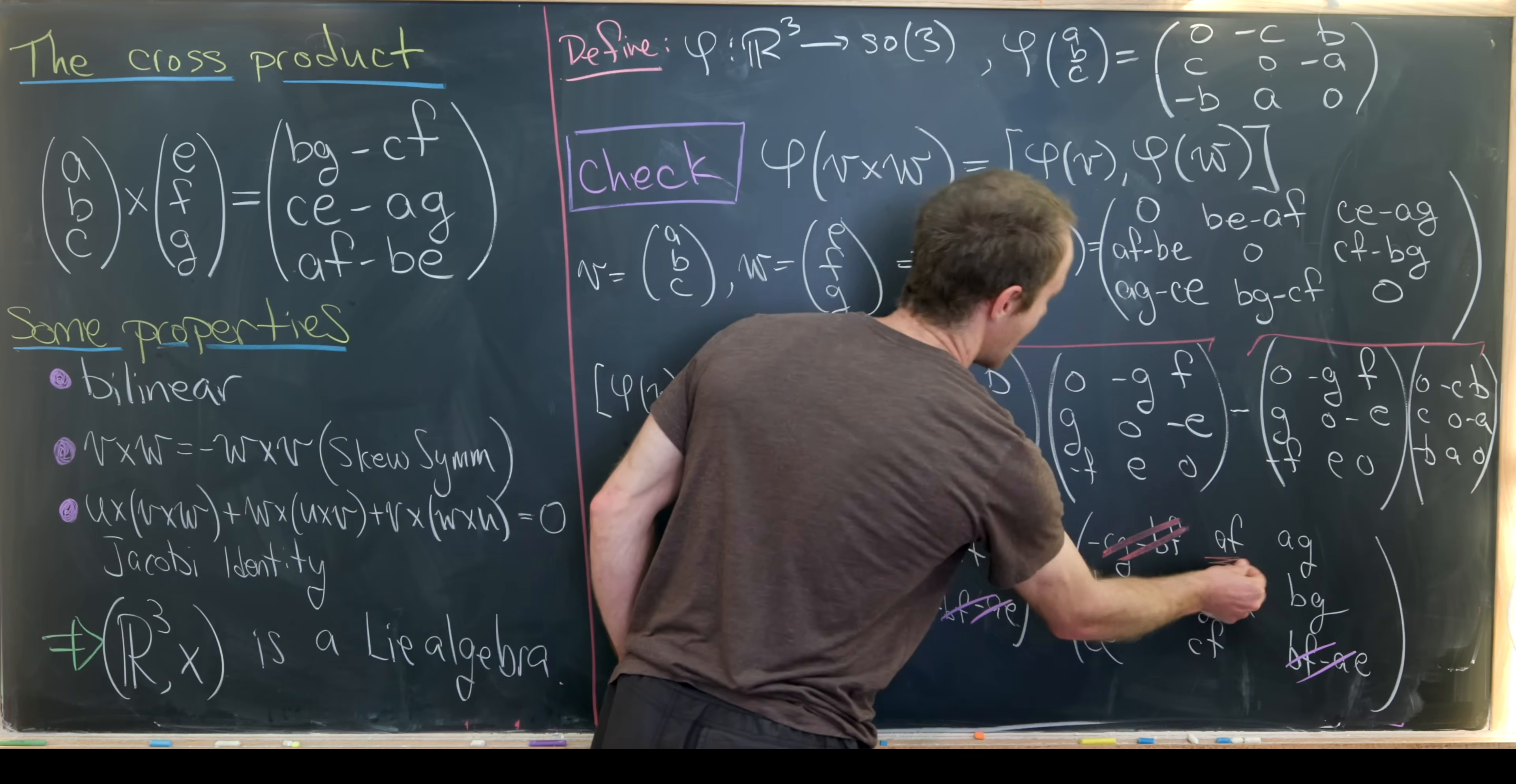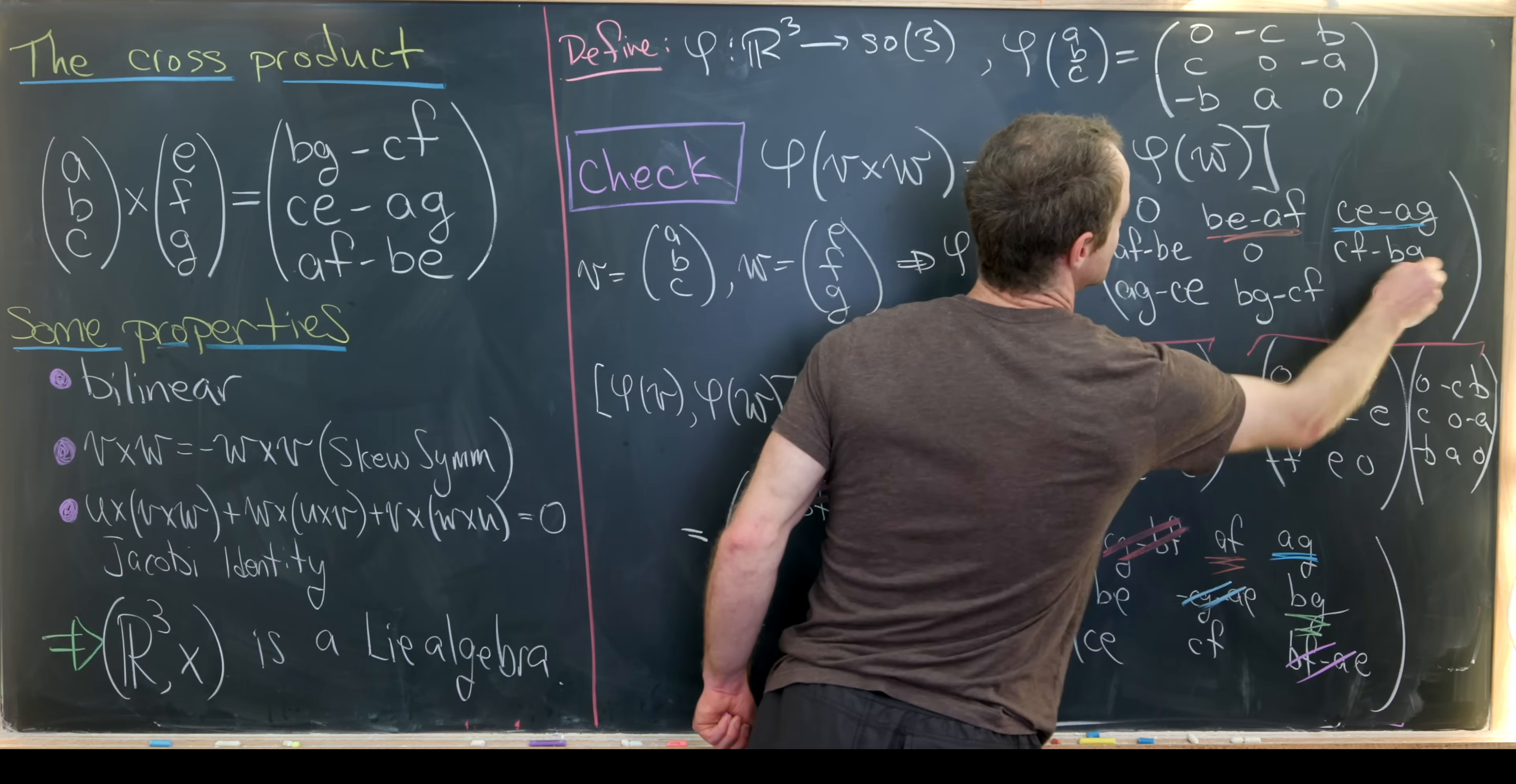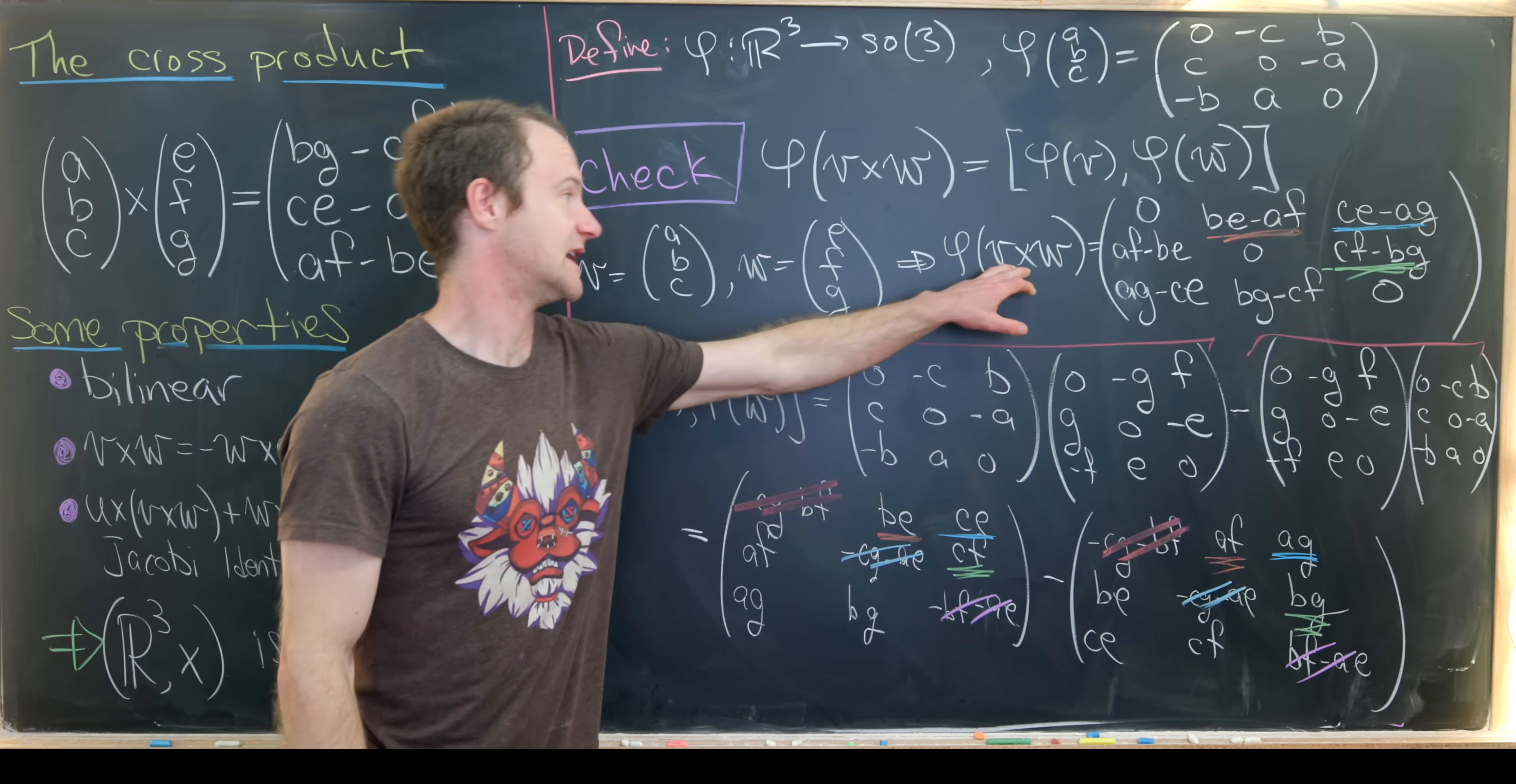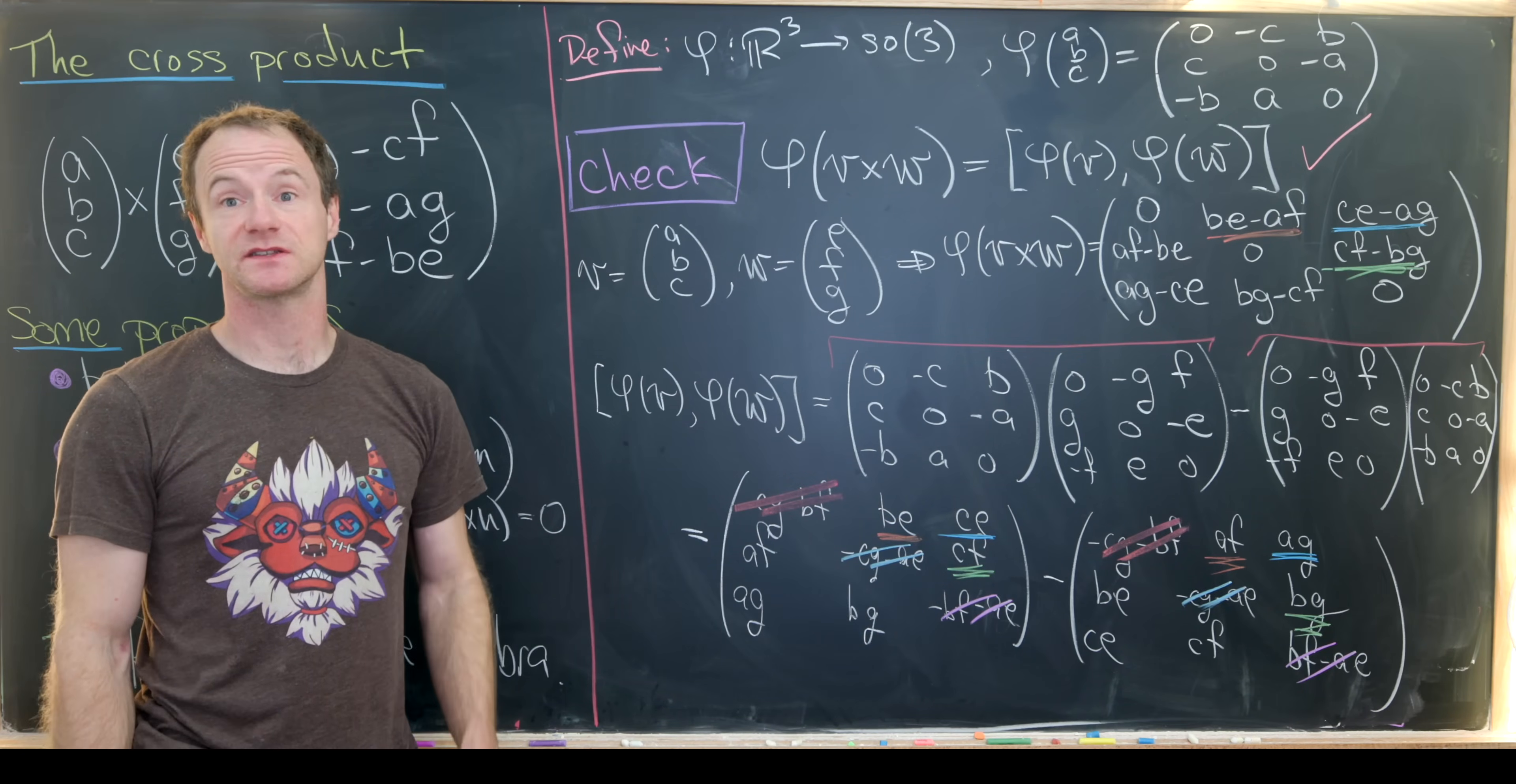And then here we have CE minus AG. Over here we have CF minus BG, which is exactly what we have right here. So everything is working out. So in the end, taking this commutator is the same thing as taking the cross product and then applying the map. Which means that this equation holds, which is exactly what we needed to do to push this Lie algebra of the cross product into the Lie algebra of special orthogonal matrices. And that's a good place to stop.